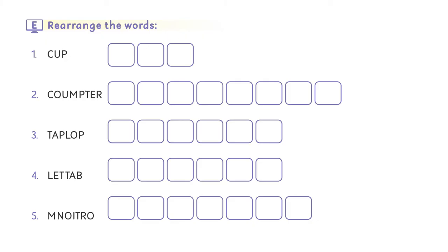Part E is rearrange the words. Number one is cup, you rearrange it to CPU. Number two is computer, C-O-M-P-U-T-E-R computer. Number three is laptop, L-A-P-T-O-P laptop.